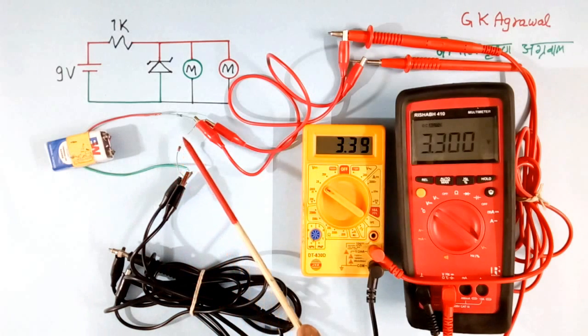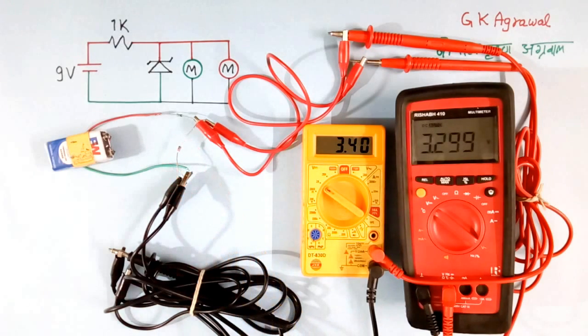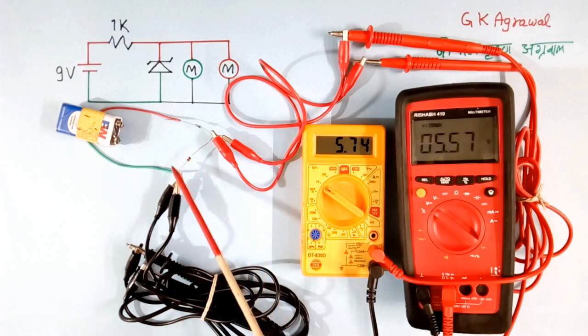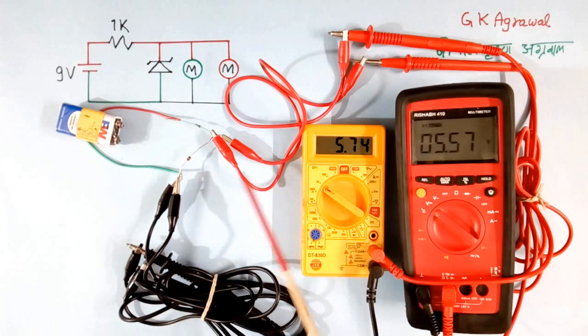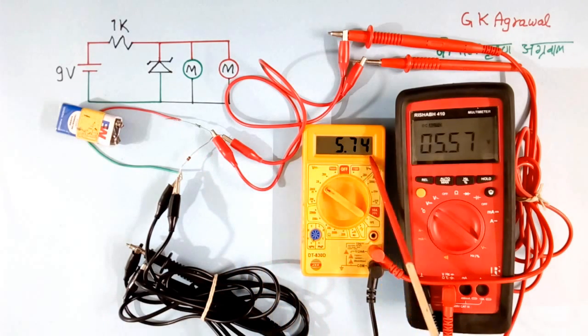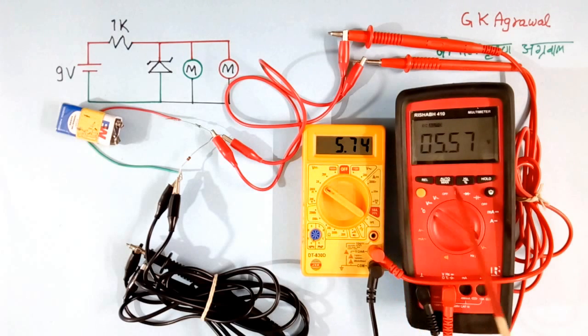Now I will connect another Zener diode and see. Now I have connected another Zener diode. So the voltage of this Zener diode is 5.74 volts as per this multimeter, and 5.57 volts as per this multimeter. Now this multimeter is not required. This is the accurate value. Because I know my multimeter is always reading more value, so even if this is not there, I can find the correct value.